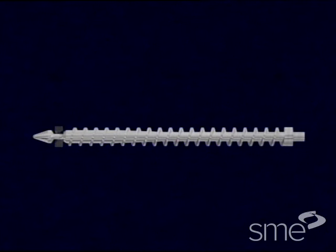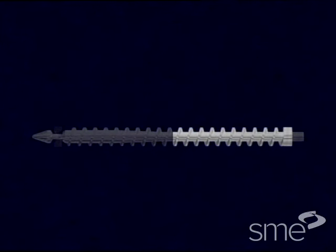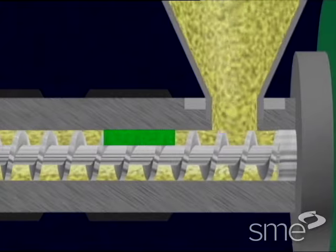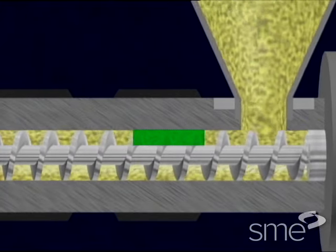The screw consists of three zones. The first zone, which is one half of the screw, is called the feed zone. It has a constant flight depth which forces the material together and rids it of air.